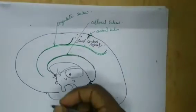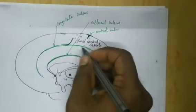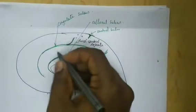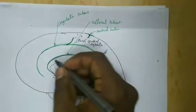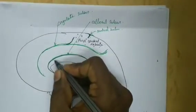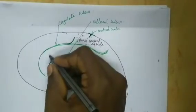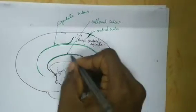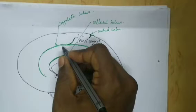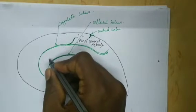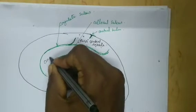Related to these two sulci we can study two more gyri. Between the callosal sulcus and the cingulate sulcus we have the cingulate gyrus.